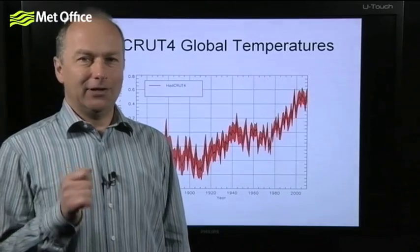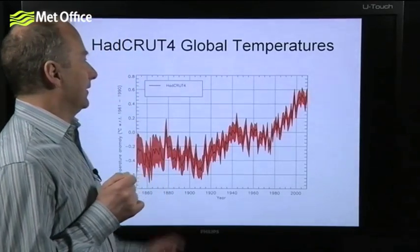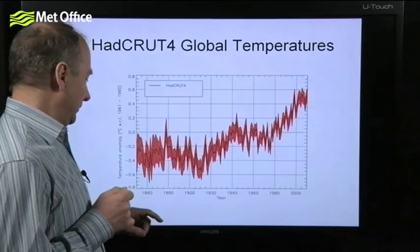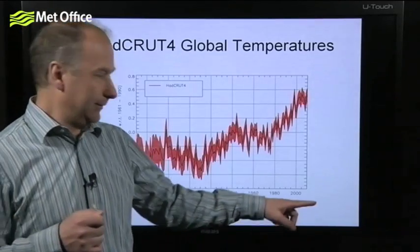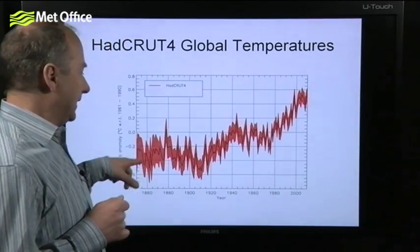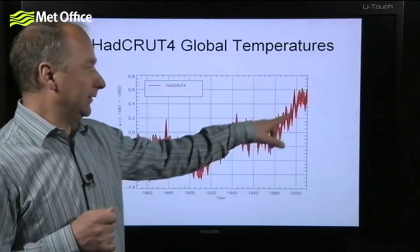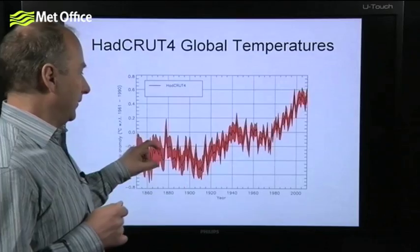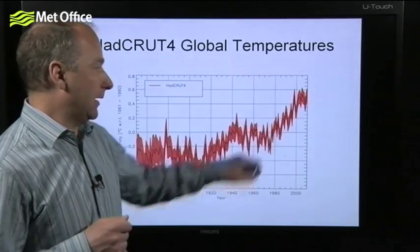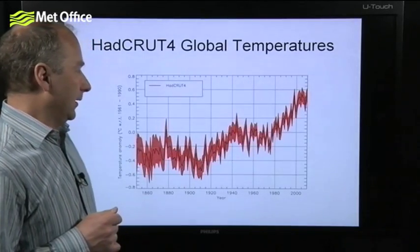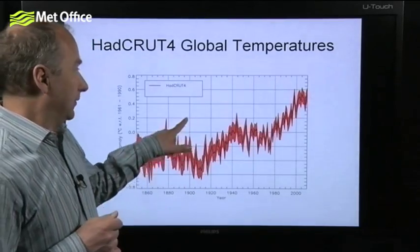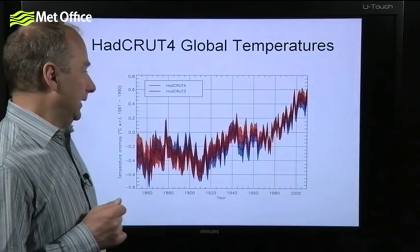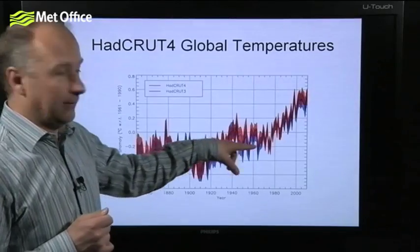You can see what effect these changes have had on the record here. This is the HadCRUT4 global temperature record, going from 1850 to the present day. In red, the solid line shows our new best estimate of global temperatures, with the uncertainty band around it. Compared with HadCRUT3, our previous record, shown here in blue.